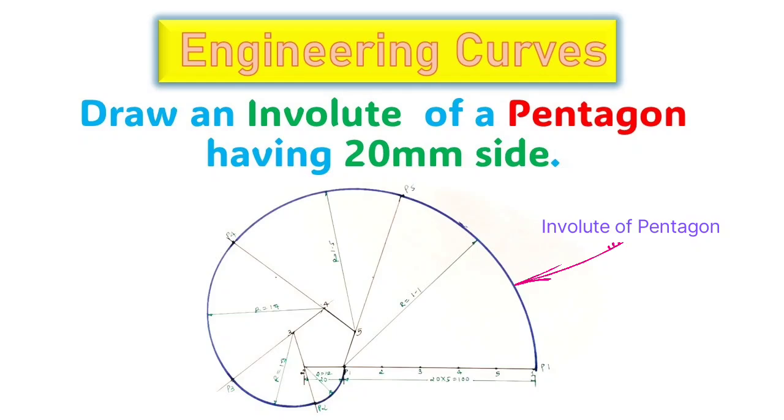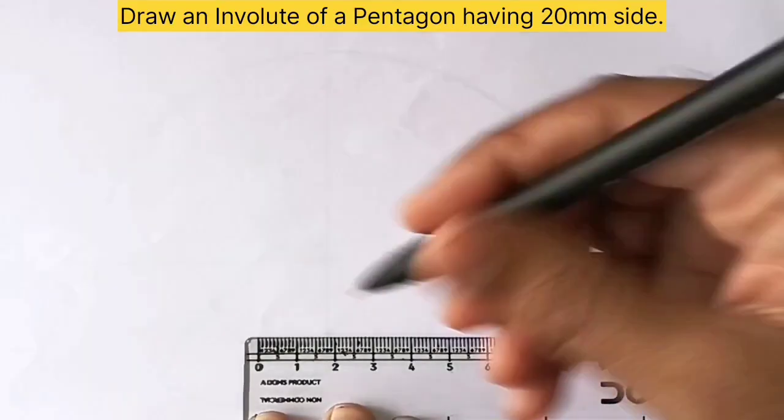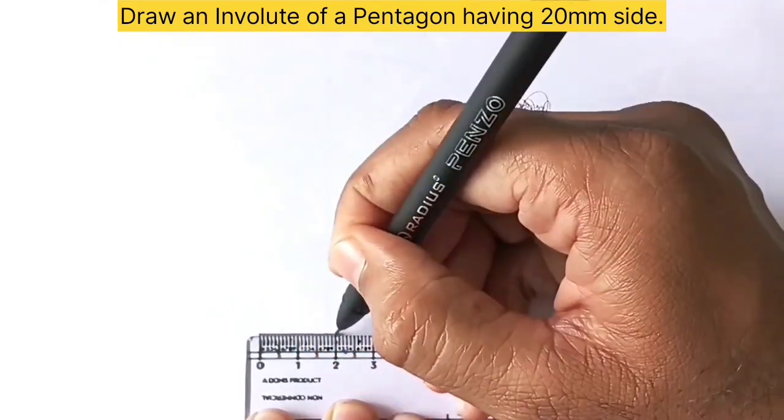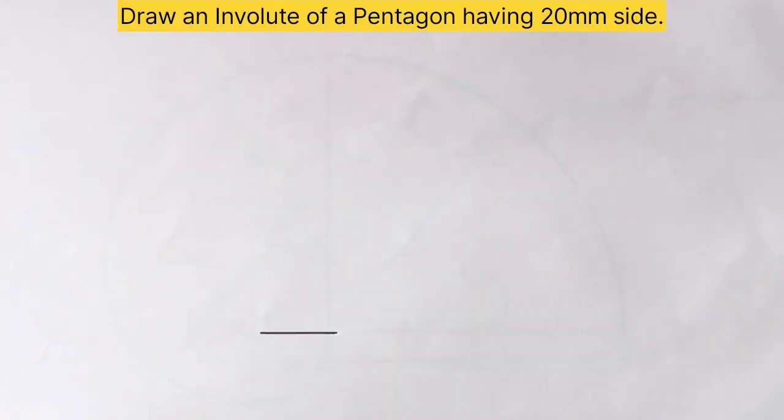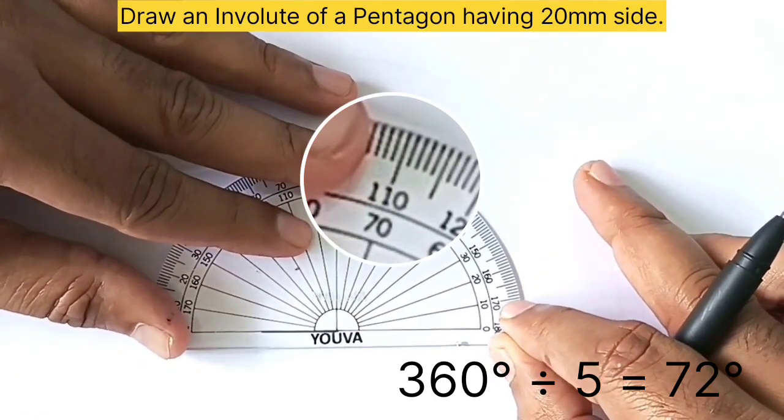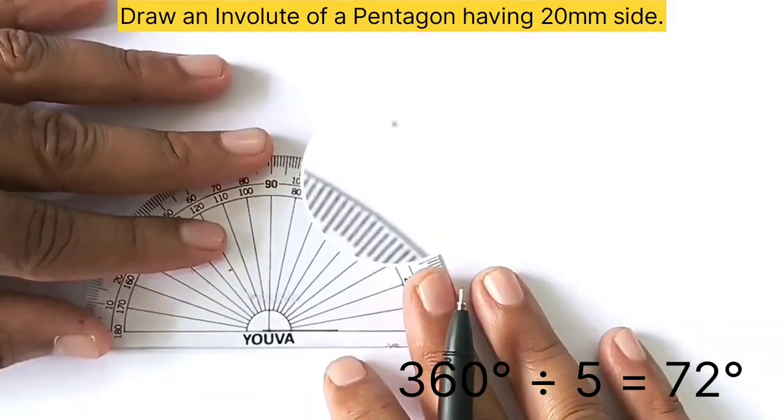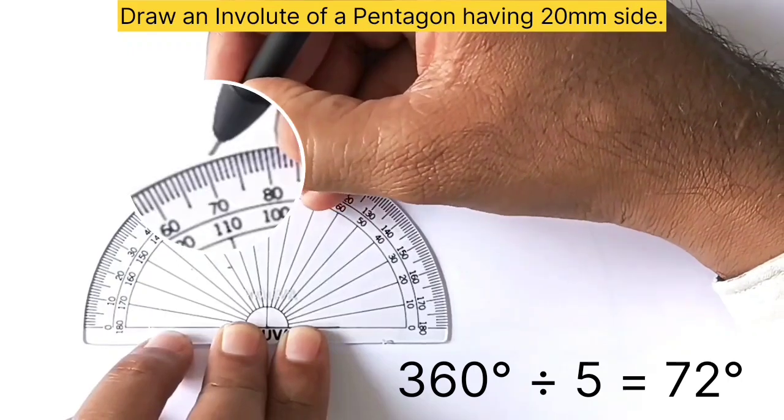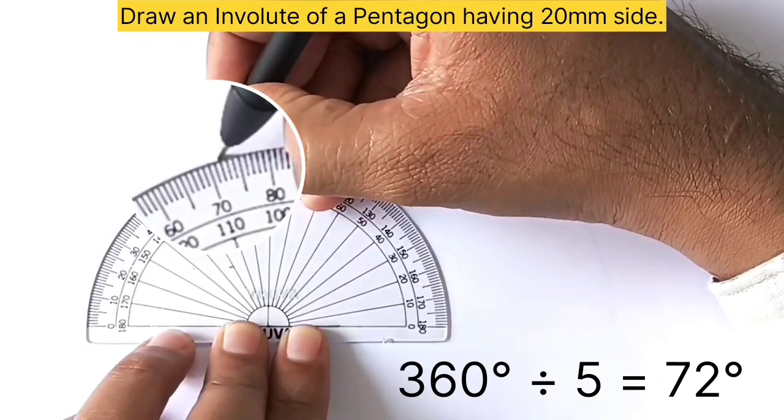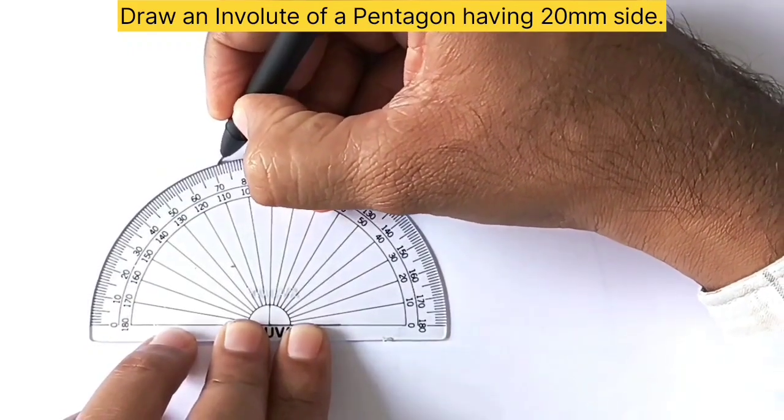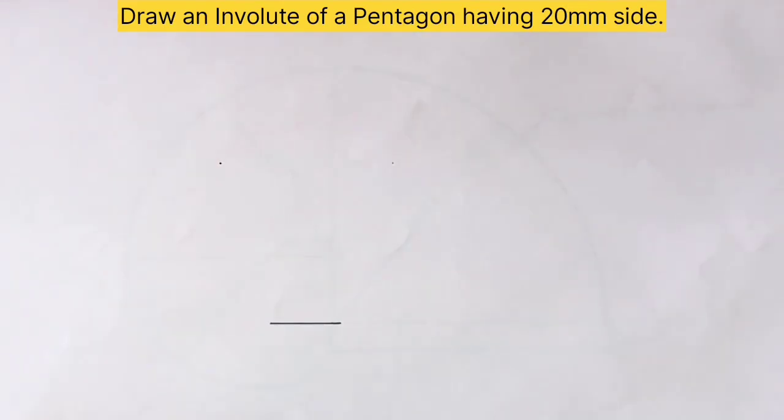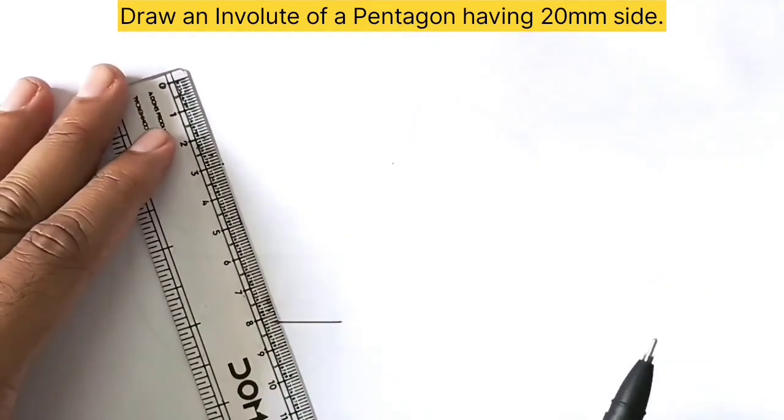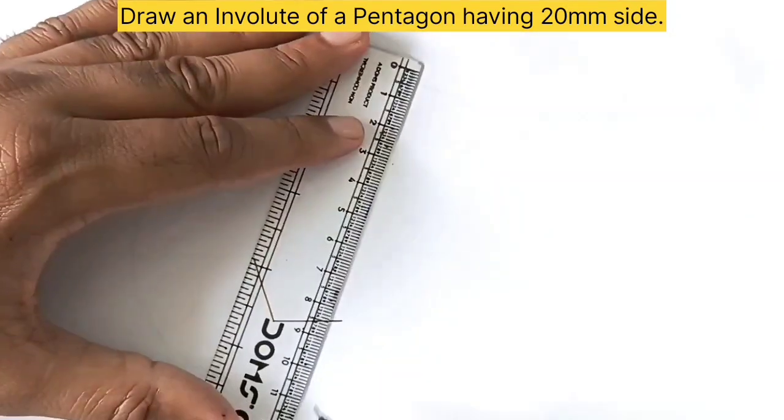In the given problem, the side length of the pentagon is given as 20mm. First, take a ruler and draw a horizontal line of 20mm. Next, take a protractor and keep it at the endpoint of the line and mark a point at 72 degrees. After this, using this point as a reference point, draw a line of 20mm.